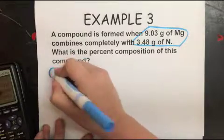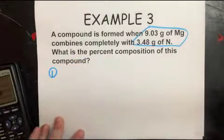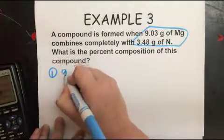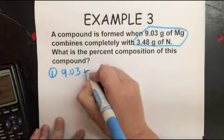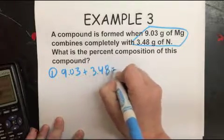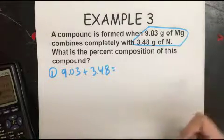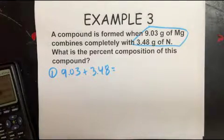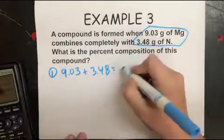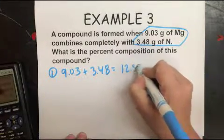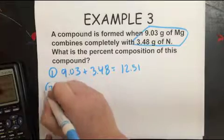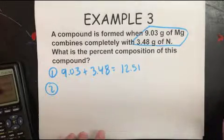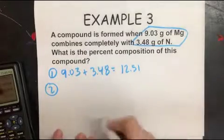What is the percent composition of this compound? So step one is to find the mass of the compound. To do this, you're simply going to do 9.03 plus 3.48, because they combine together to become a compound. So you get 12.51. And then, you're not doing anything with the periodic table here.